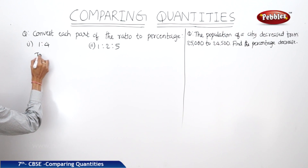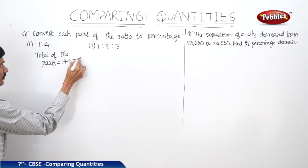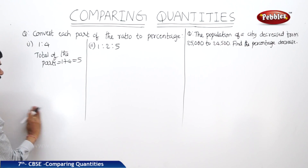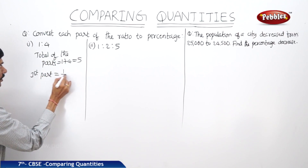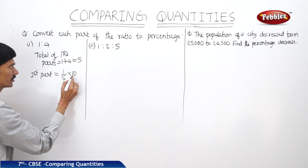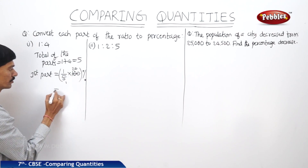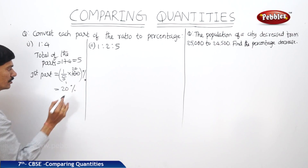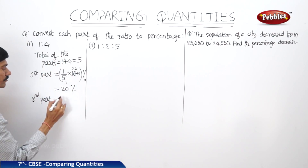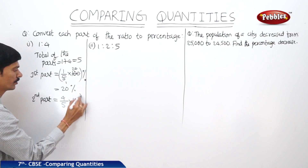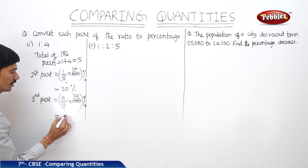The total of the parts is 1 plus 4, which equals 5. The first part equals 1 by 5 into 100%, which gives 20%. The second part equals 4 by 5 into 100%, which gives 80%.